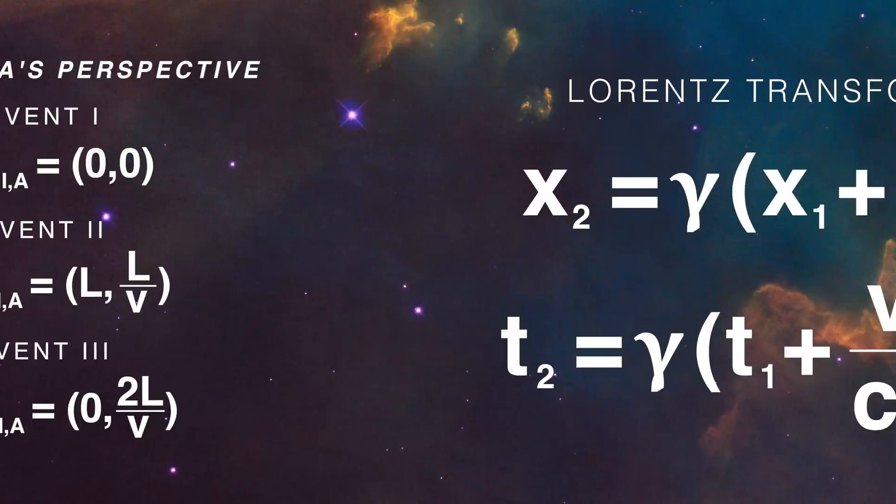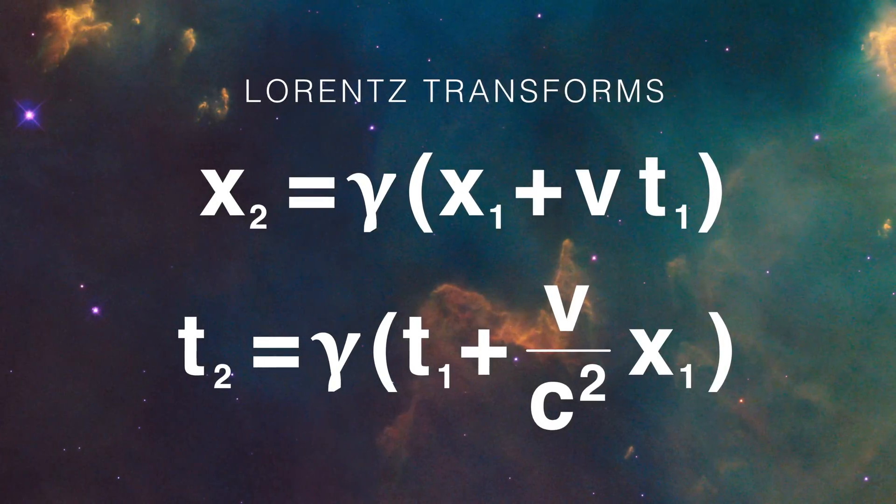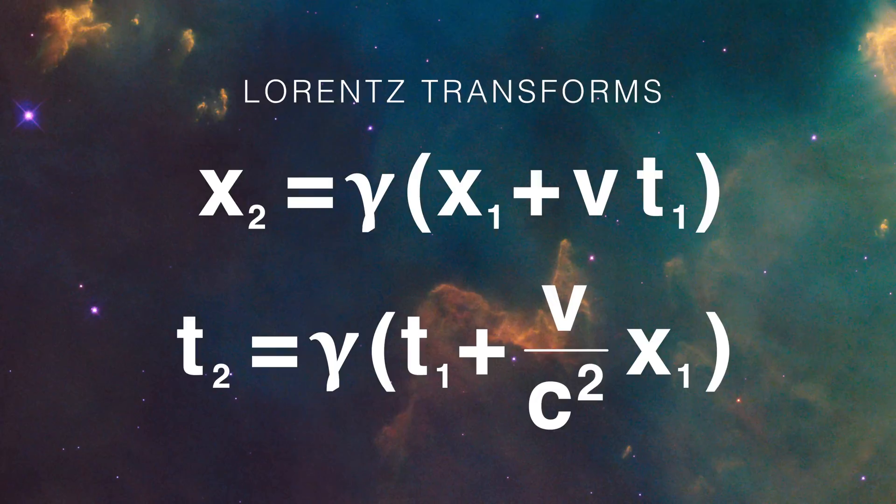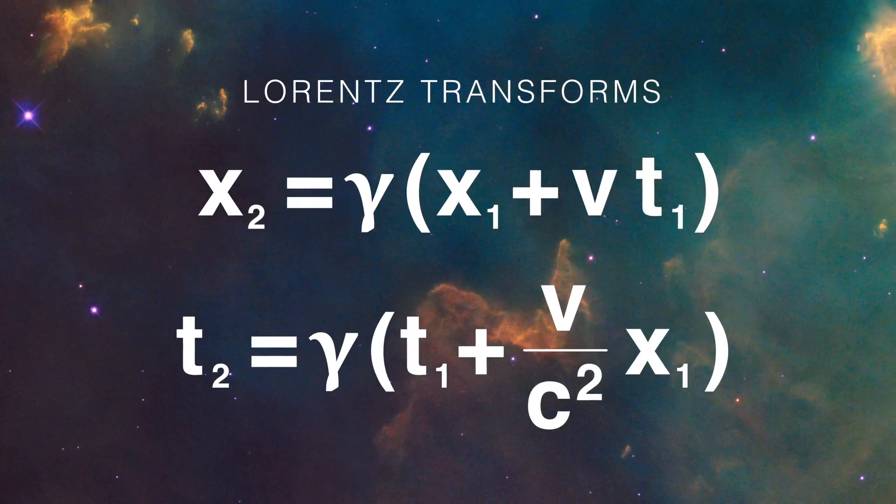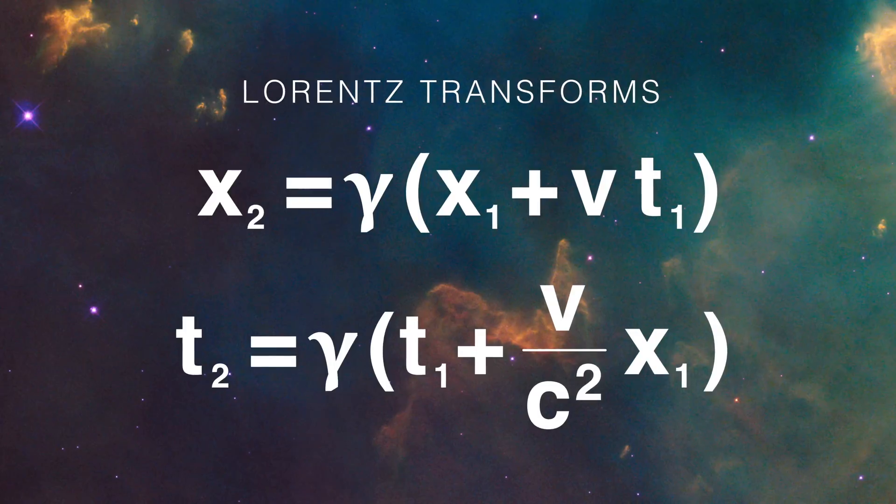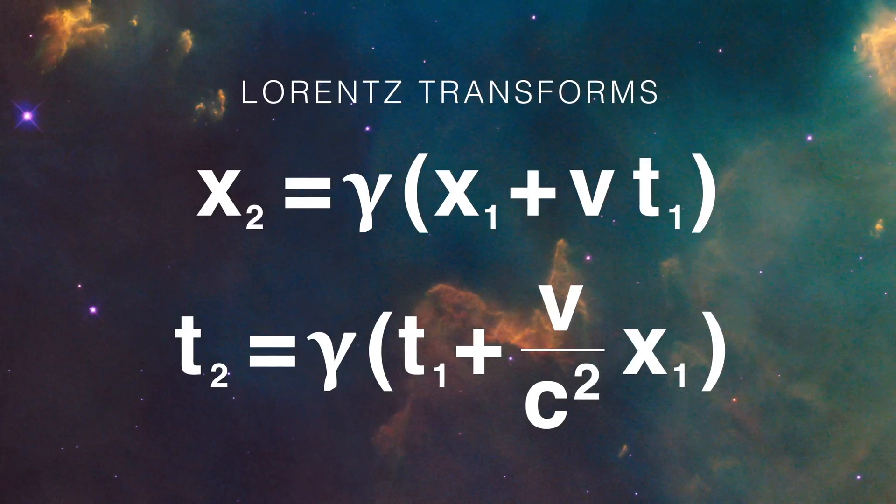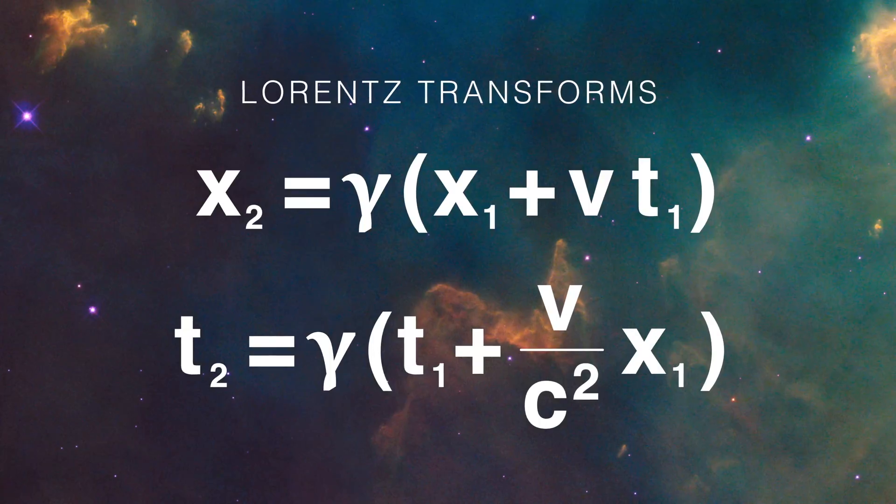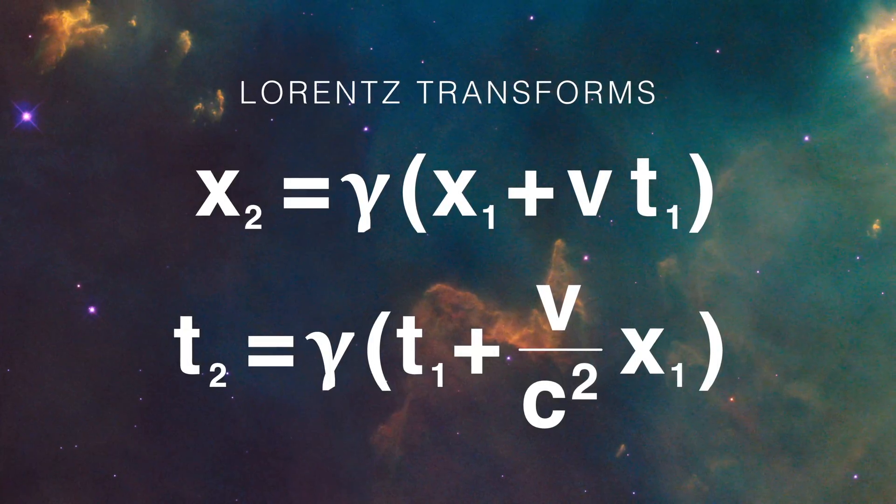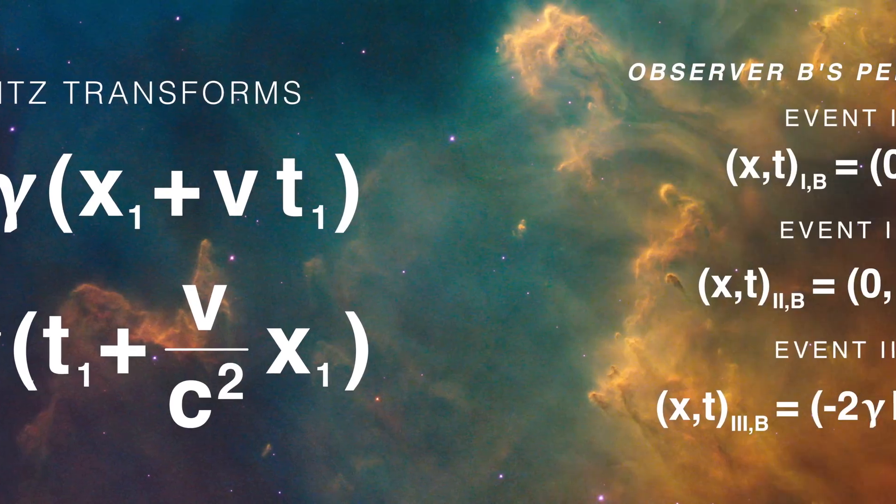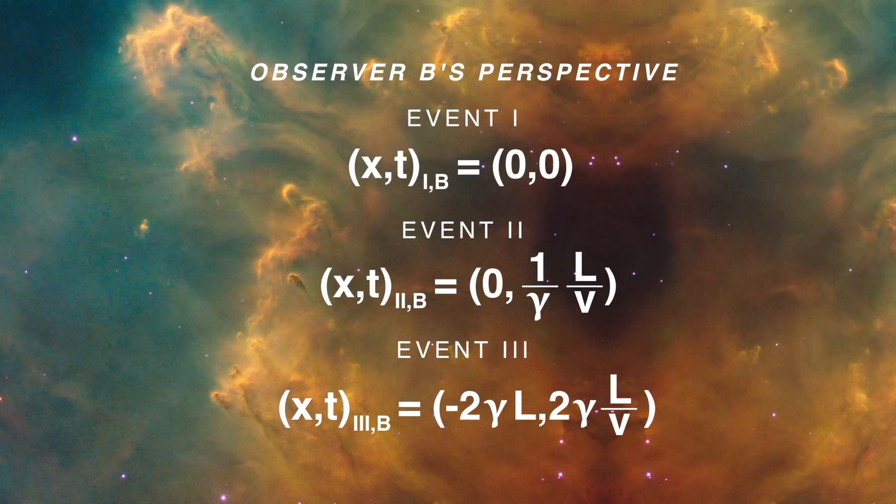Okay, now we just use the Lorentz transforms to figure out the position and time observers B and C see for those three points. It's important to remember to get the sign right on the velocity. As far as observer B is concerned, observer A is moving with a negative velocity, but observer C sees observer A moving with a positive velocity. So we can do that, and we find that observer B sees things differently.